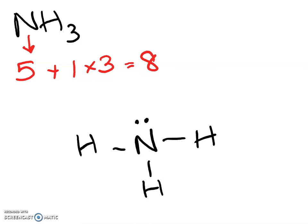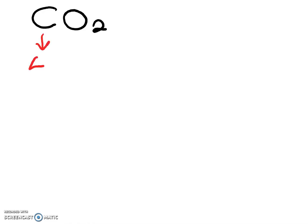I want to look at carbon dioxide next, because it's a little bit trickier. The carbon atom has four valence electrons — two in its first shell and four in its second shell. There are two oxygen atoms, and each one has six electrons in its valence shell. So if we add all those together, we get 16 electrons that need to be shown in our Lewis diagram.